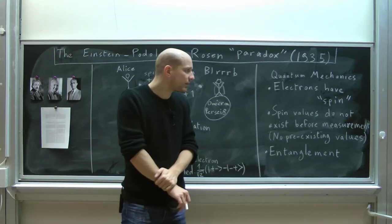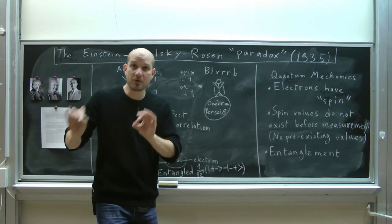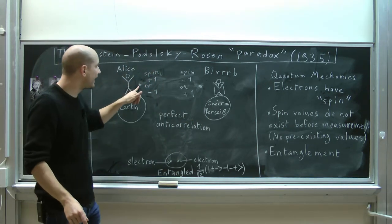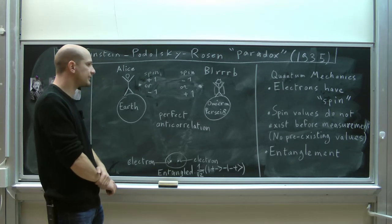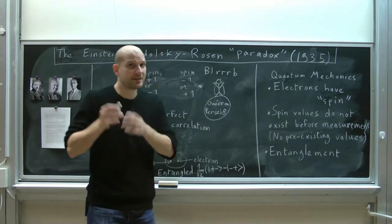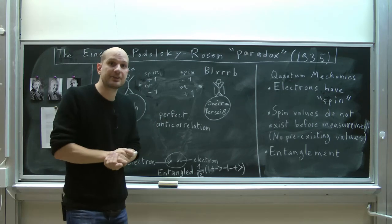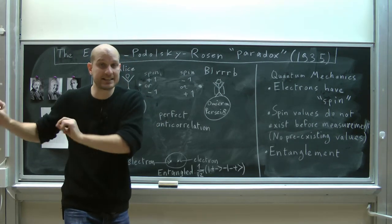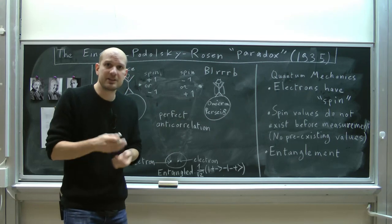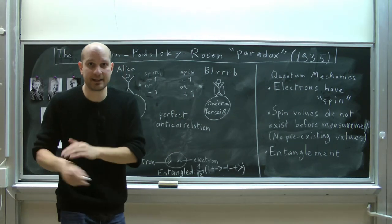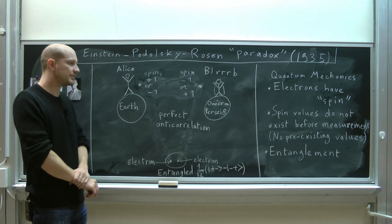The second ingredient from quantum mechanics is that the value of the spin of the electron does not actually exist before the measurement is done. That means that before Alice measures the spin of her electron, there isn't a pre-existing value for the spin. I can reformulate this by saying that if one wants to measure the spin of an electron, then one has to affect the state of that electron. So the spin of the electron doesn't exist independently of the measurement because the measurement itself can affect the electron.